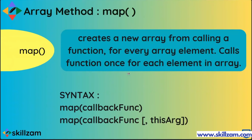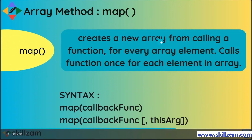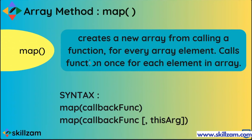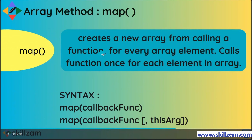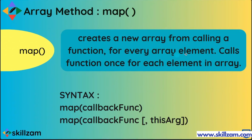Next is the map method — again an array method. What it does is create a new array from a calling function. For every array element, it creates a new array and calls the function once for each element in the array, similar to what we saw with forEach.